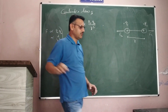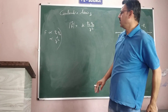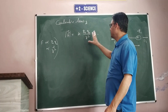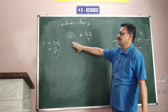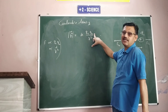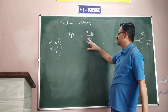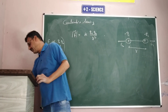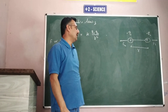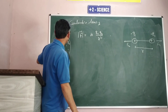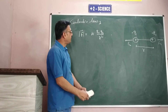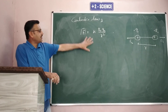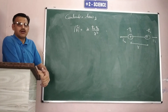Students have to write down this statement first in their notes. Write the topic as Coulomb's law, then write down the statement: force between two charges is proportional to the product of charges and inversely proportional to the square of the distance between them. This is the magnitude of force between two charges, and this law is known as Coulomb's law. Note that force is a vector quantity.